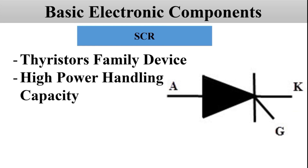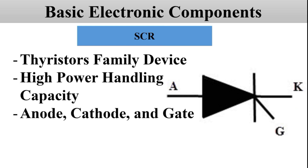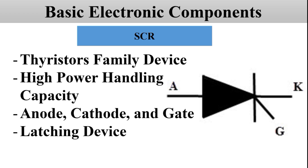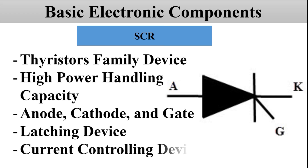SCR has the highest power handling capacity of all semiconductor devices. SCR basically has three terminals: anode, cathode, and gate. SCR is a latching type device that can be turned on by the control terminal, which is the gate. But once it turns on, the gate loses control over it and after that it cannot be turned off by the gate terminal. SCR is basically a current-controlling device because the gate current controls the SCR.